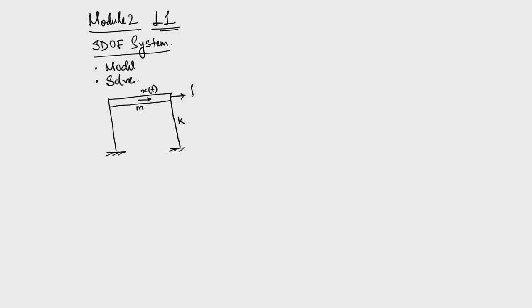Let us apply a force f(t). We can idealize this system by identifying the structural elements: the column provides stiffness in the lateral direction, and the mass m vibrates the moment we apply forcing function f. We can represent the mass moving in the lateral direction with x(t) as the degree of freedom. When it moves laterally, it experiences a stiffness represented by a spring.